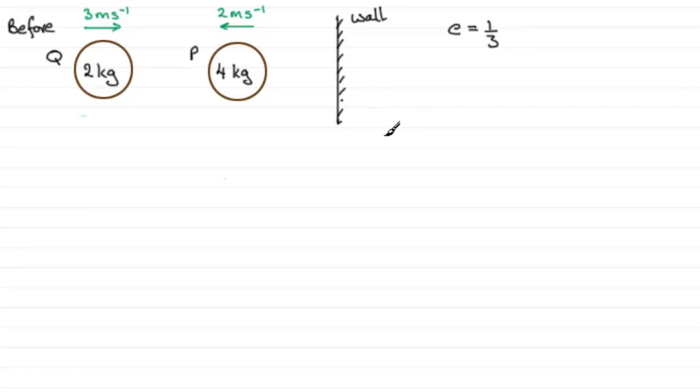So we're told that after rebounding from the wall, P collides directly with this particle Q of mass 2 kilograms and it's moving with the speed of 3 meters per second towards P. And we're told that the coefficient of restitution between P and Q is given as E equals a third. And we've got to show that there'll be a second collision between P and the wall.